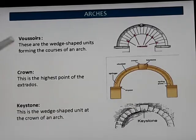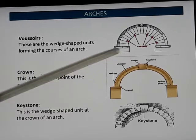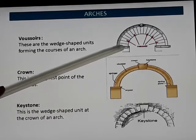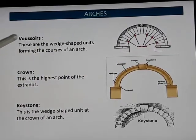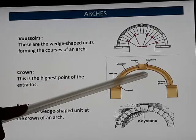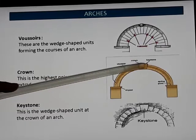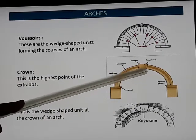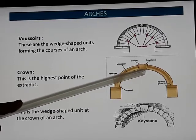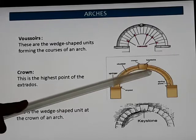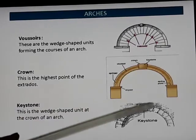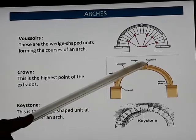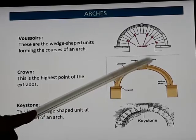Next, we can see voussoirs, crown, and keystone. Voussoirs are the wedge-shaped units placed together to form the arch. Among these, the keystone is the center wedge-shaped unit placed at the crown, fixing together both symmetrical parts of the arch. The crown is the topmost or highest point of the arch.